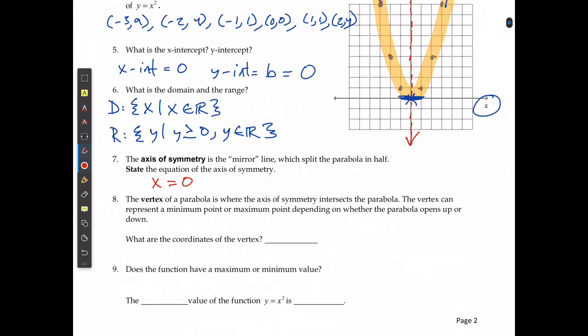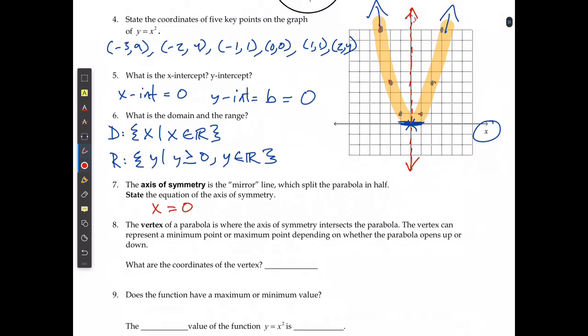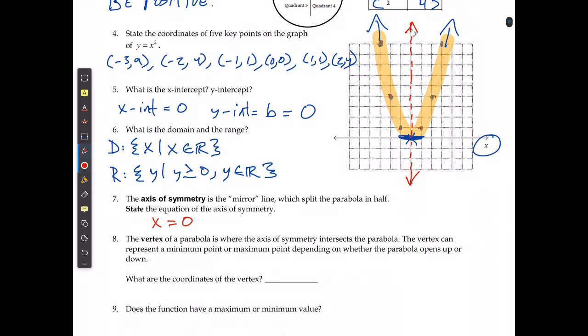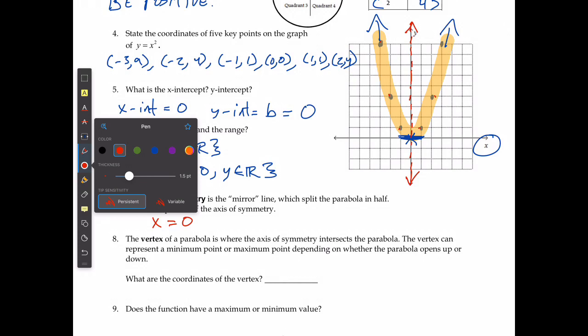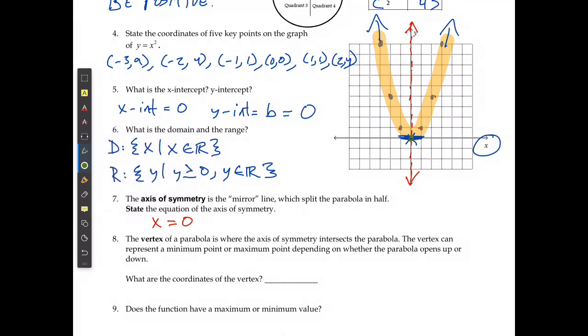The vertex is where the axis of symmetry intersects the parabola. The vertex can represent either a minimum or lowest point and a maximum or highest point depending on whether the parabola opens upwards or downwards. So, if I take a look at my parabola and that axis of symmetry line that we just drew, they cross right here. That's going to be my vertex. And in this case, the vertex occurs at 0, 0.